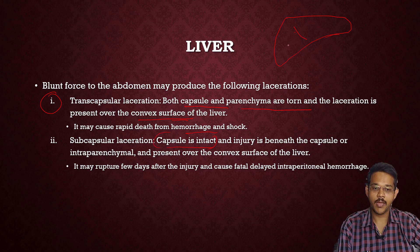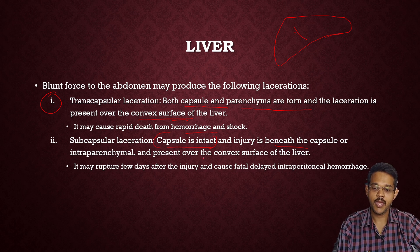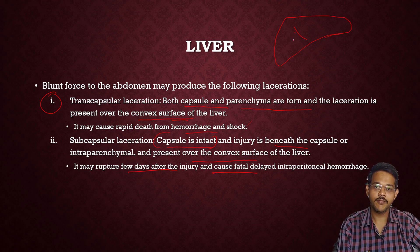Subcapsular lacerations occur where the outer capsule is intact but injury is present within the capsule or intraparenchymal, on the convex surface of the liver. These may rupture a few days after the injury and cause fatal delayed intraperitoneal hemorrhage. At the time of initial impact there may be contusions, but after a few days these may rupture the liver leading to intraperitoneal hemorrhage and death.